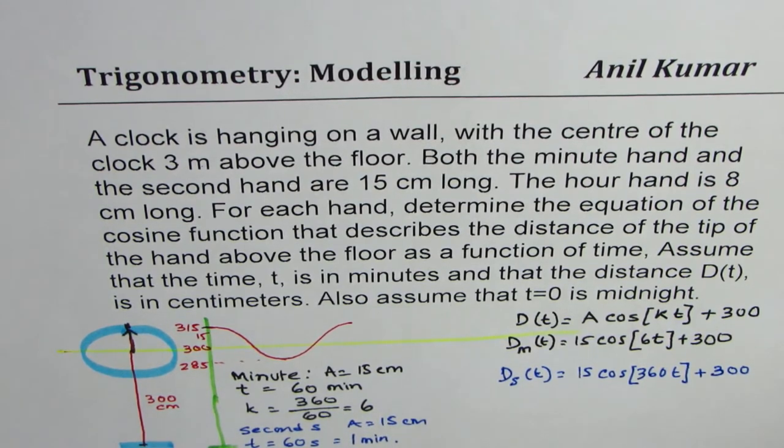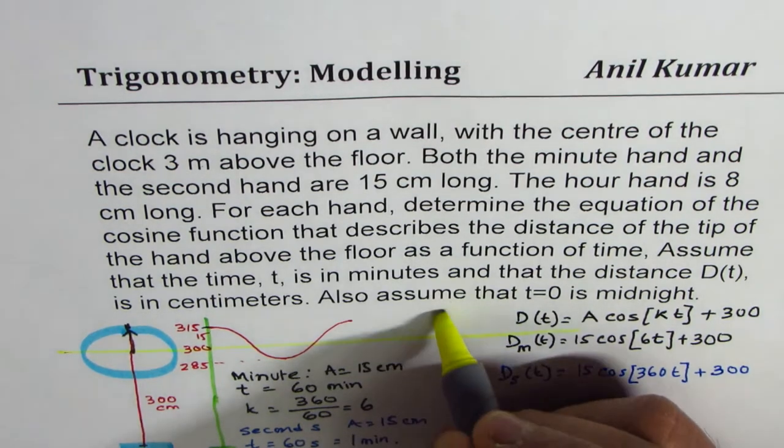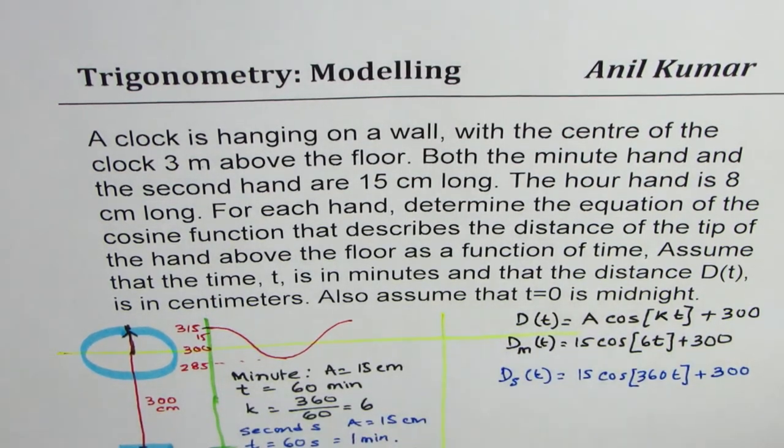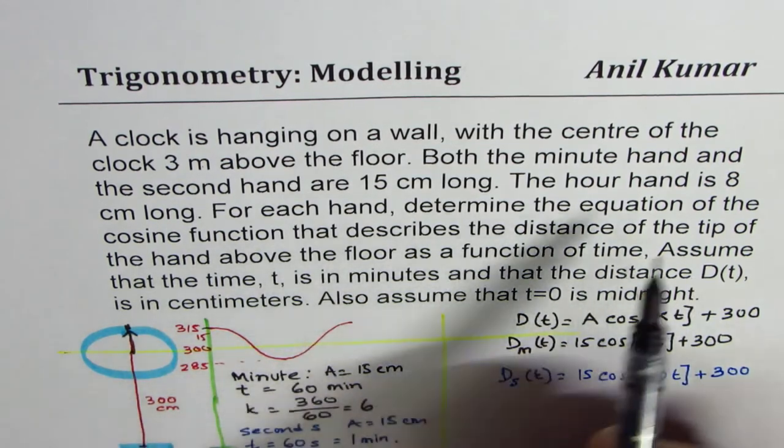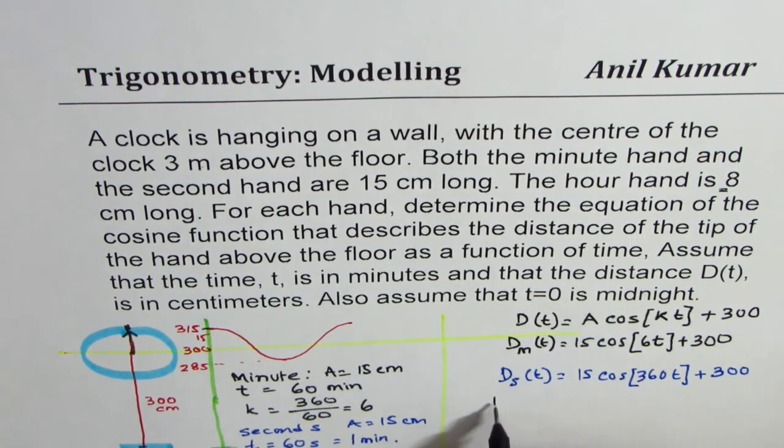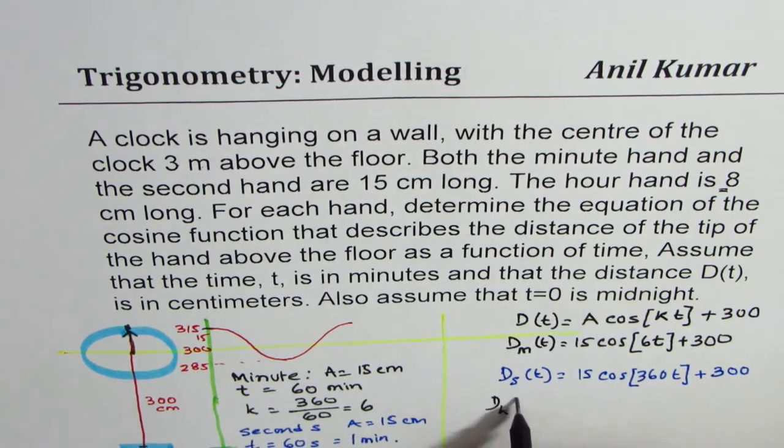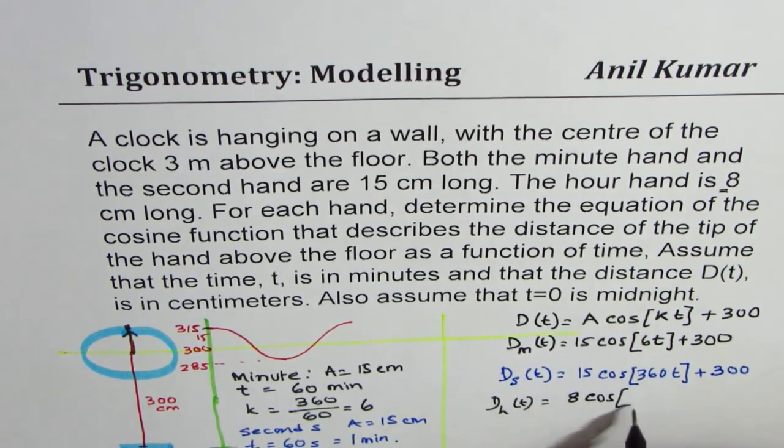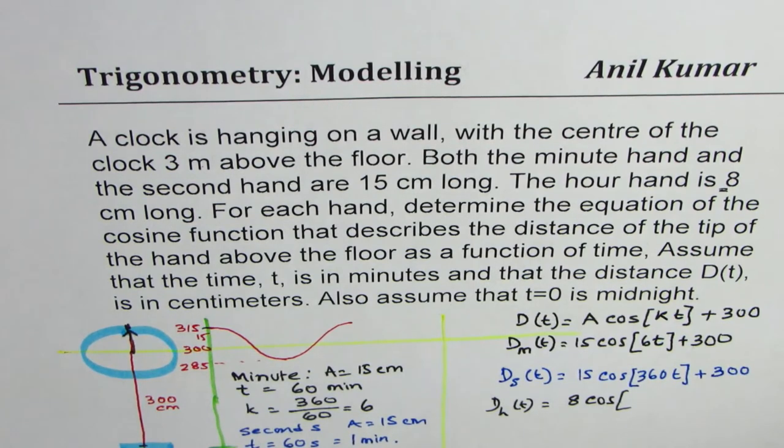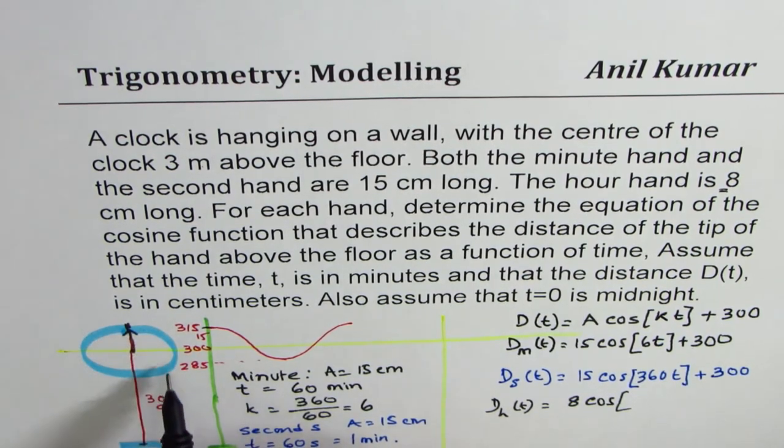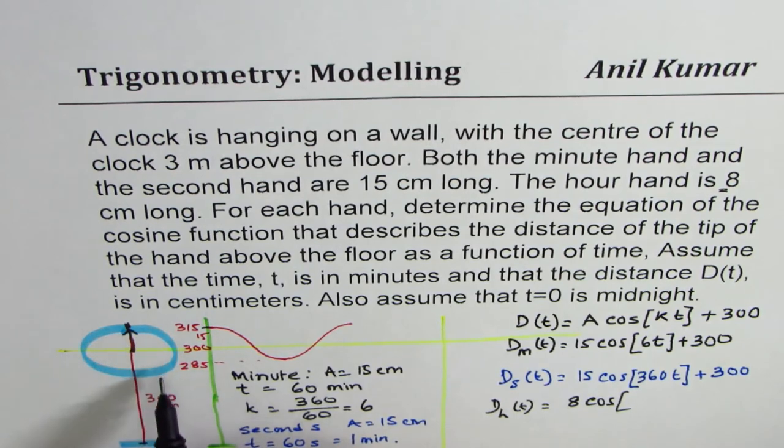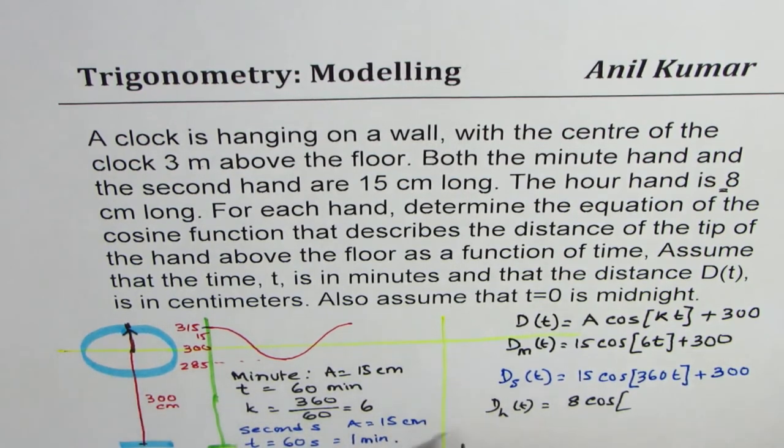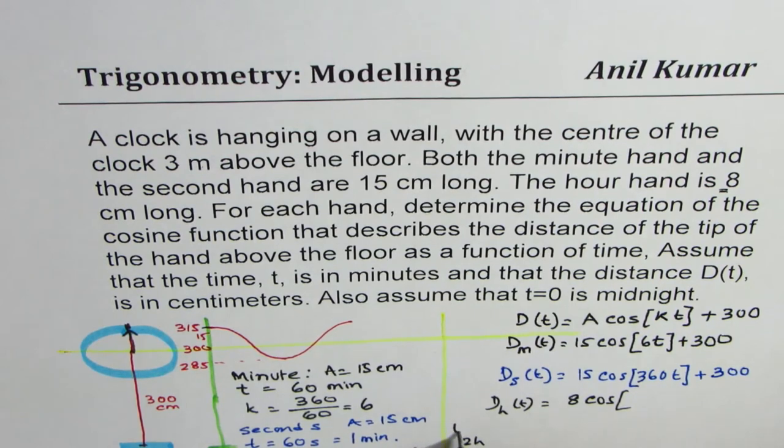Now how about an hour hand? So for the hours, it is 8 centimeters. So for our hand, we can write this amplitude as 8 cos of what is the value of k? For completing one full cycle, it takes 12 hours. It takes 12 hours. So that is the time period.